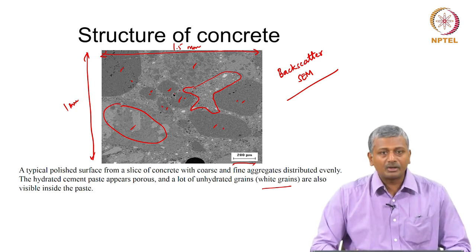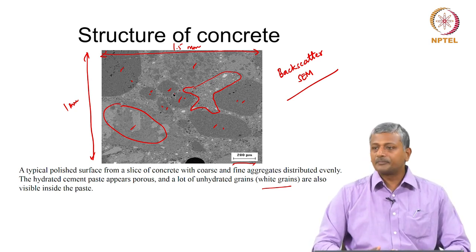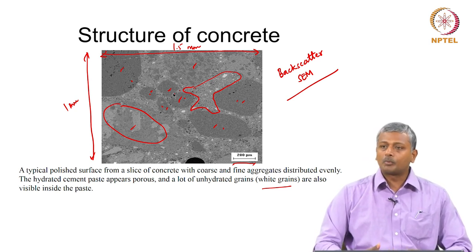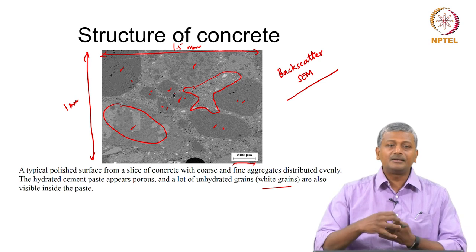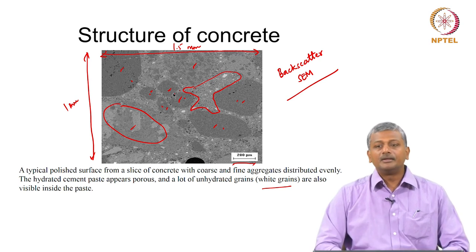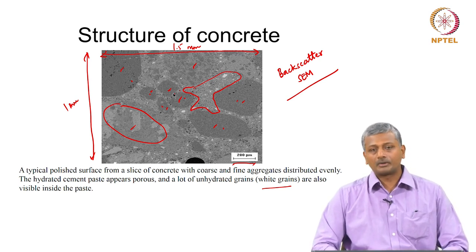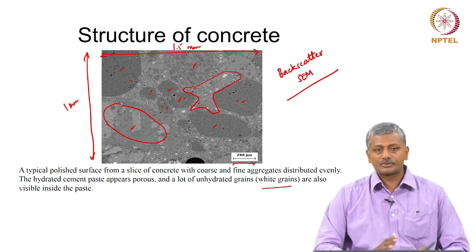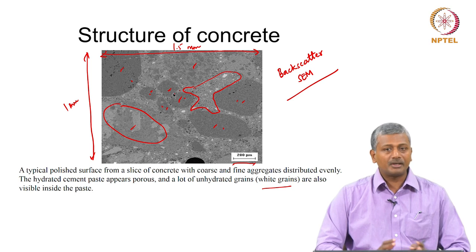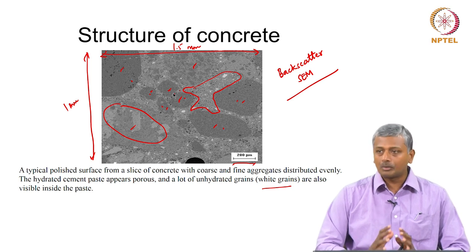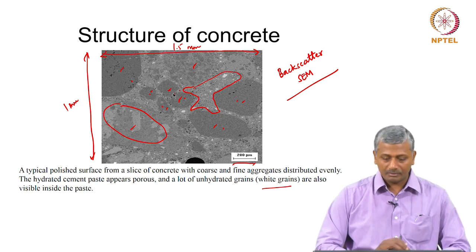Those black spots are basically the porosity existing within the paste. This porosity is ultimately responsible for most of the properties of your concrete. If you have more porosity, you have lesser strength. If you have more interconnected porosity, you have low durability. So strength and durability are both dependent on the porosity of concrete.